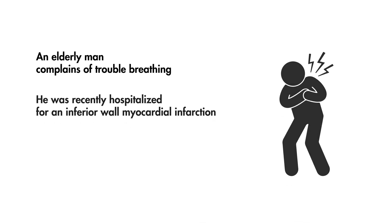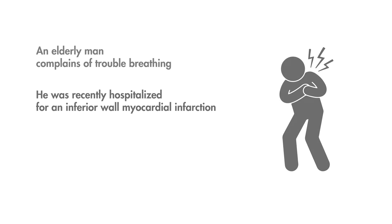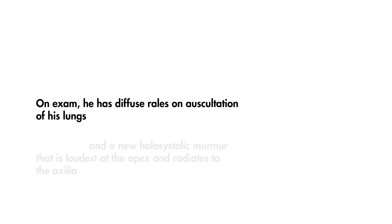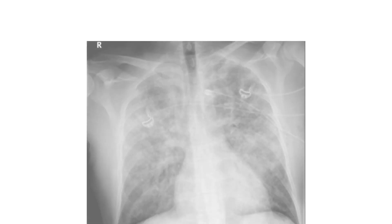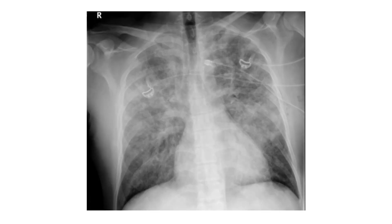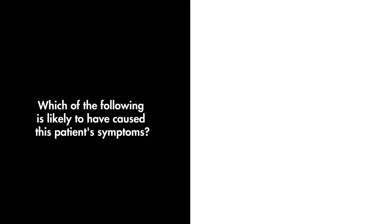An elderly man complains of trouble breathing. He was recently hospitalized for an inferior wall myocardial infarction. On exam, he has diffuse rales on auscultation of his lungs, and a new holosystolic murmur that is loudest at the apex and radiates to the axilla. A chest x-ray is ordered and is seen here. Which of the following is likely to have caused this patient's symptoms?